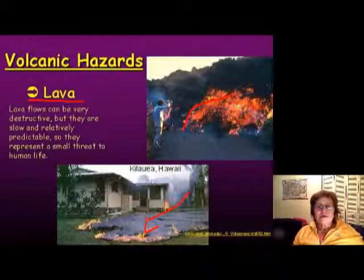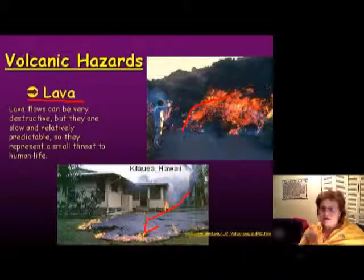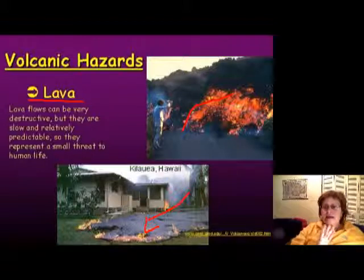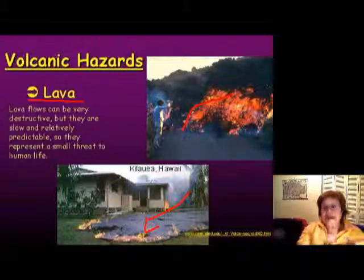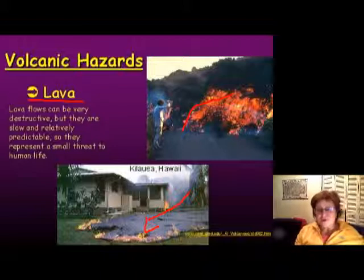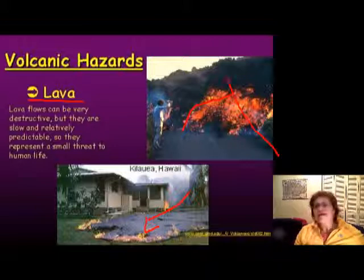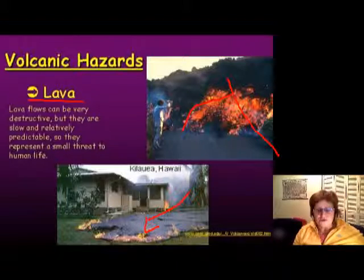When I went to Hawaii I could see roadblocks put down to make sure lava wouldn't flow through houses. If scientists can predict which way the lava is flowing, they can build walls and block roads to prevent it from going where you don't want it.